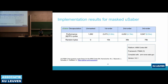This is the implementation result for the whole masked uSaber. The overhead factor for first-order is 2.32 times, for second-order it's 4.19, and for third-order it is 6.54. The overhead is reduced compared to Saber. The random byte requirements are also less: first-order requires 10 KB, second-order 36 KB, and third-order 78 KB.